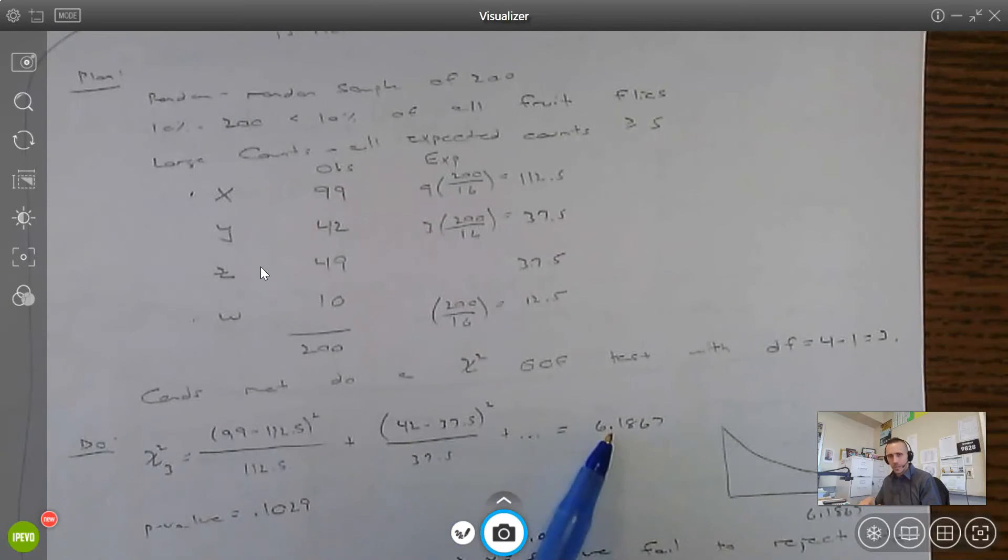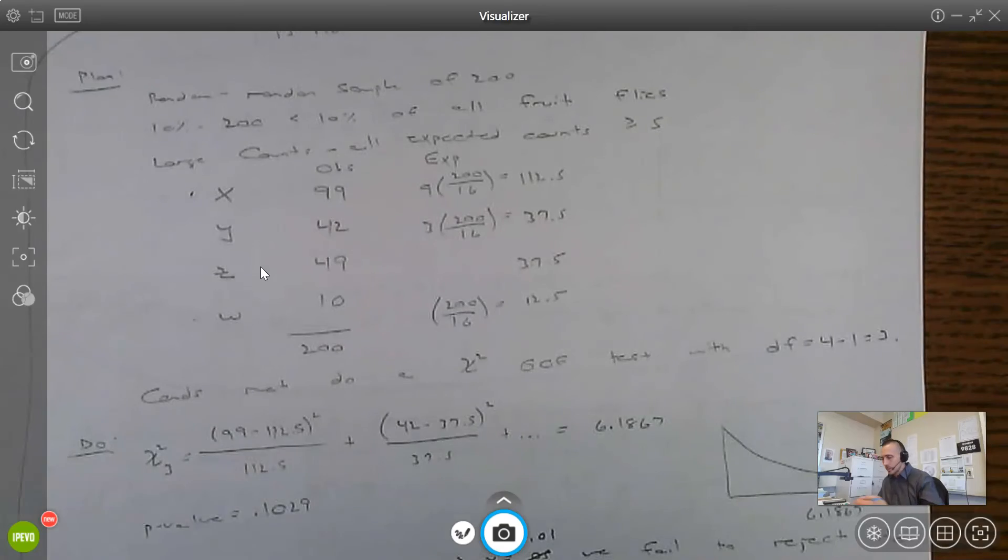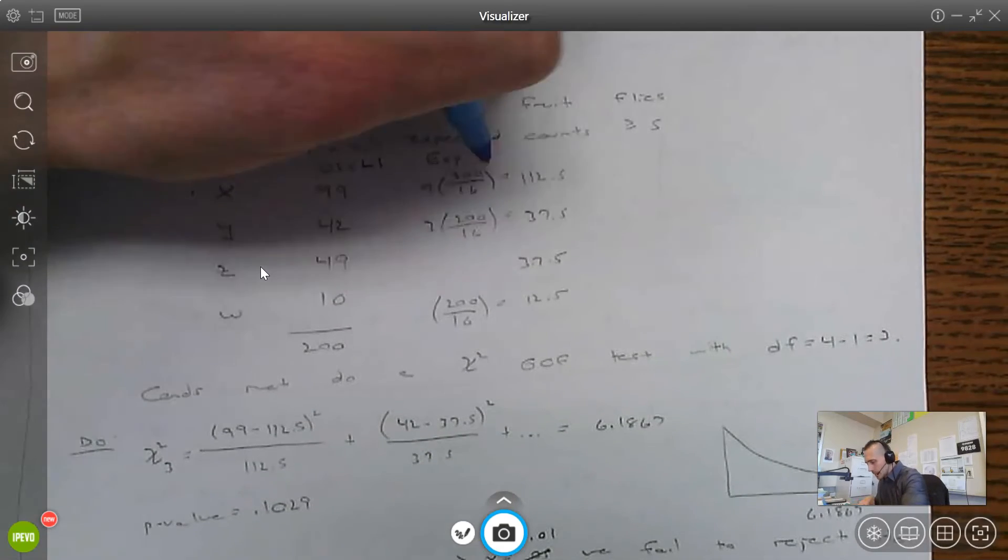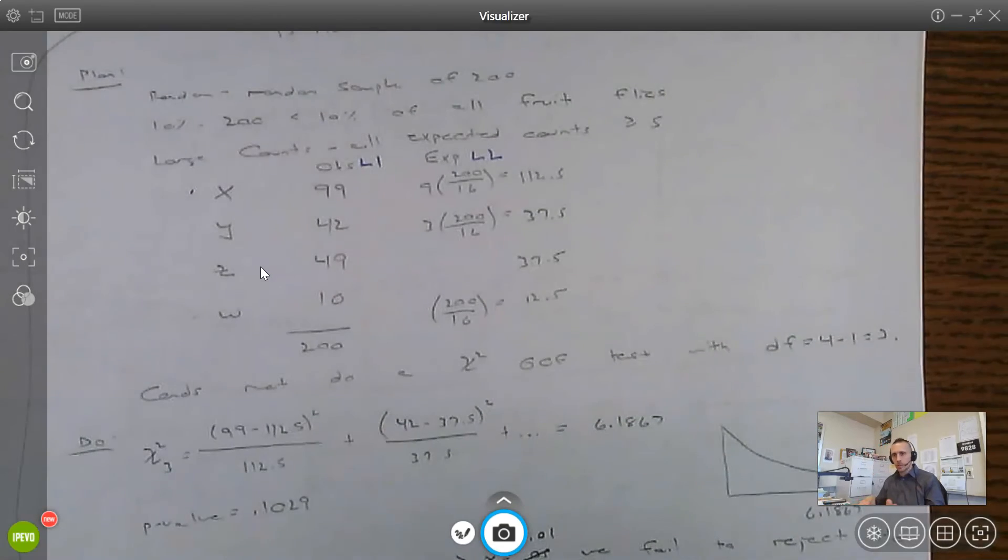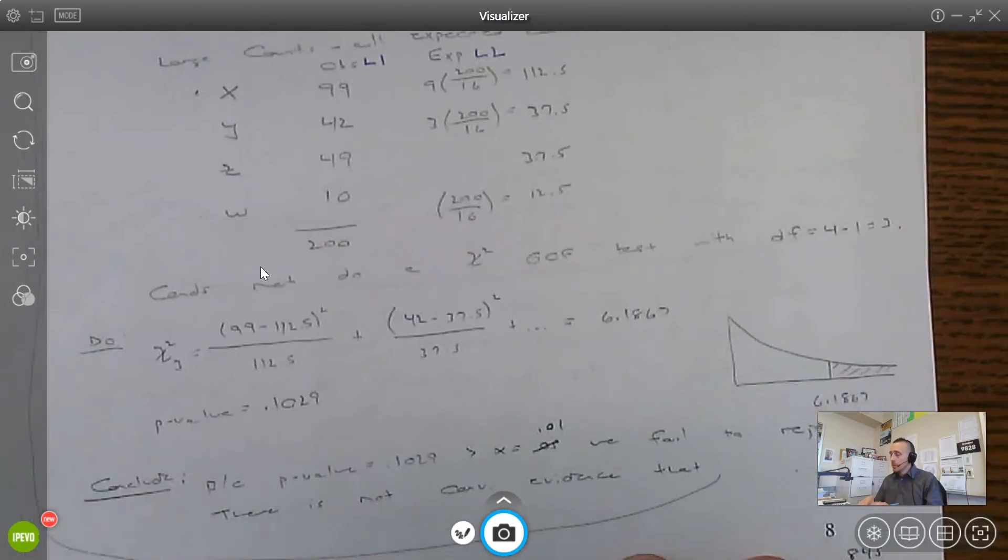I'm going to set up my test statistic with the observed minus expected squared over expected, sum these up. I get about 6.19, just doing it in the calculator with the observed in list one, the expected in list two, and running my goodness of fit test. P value ends up being 0.1 approximately. I could do chi squared CDF from 6.19 to infinity with three degrees of freedom to get this, or just run the test on my calculator.